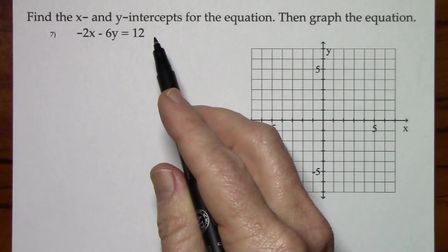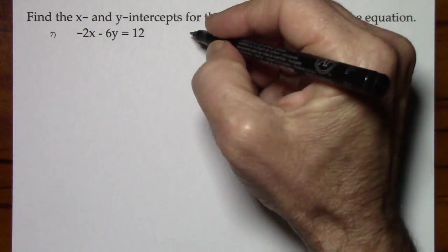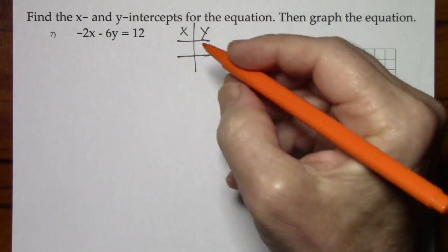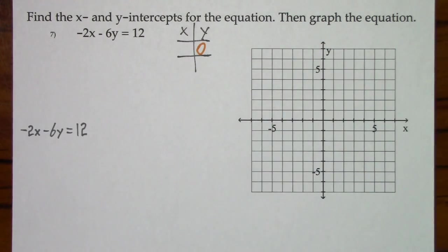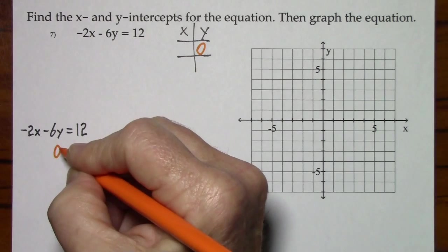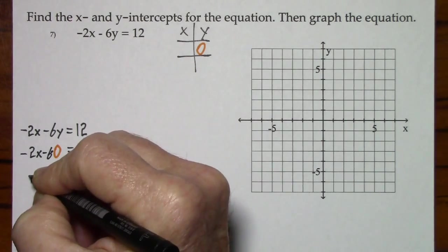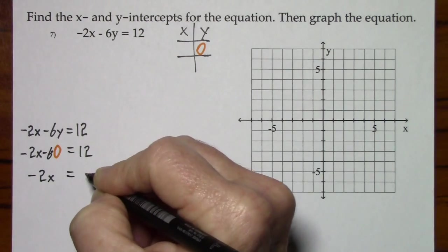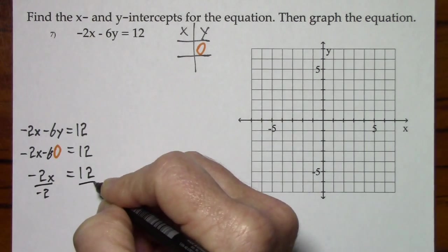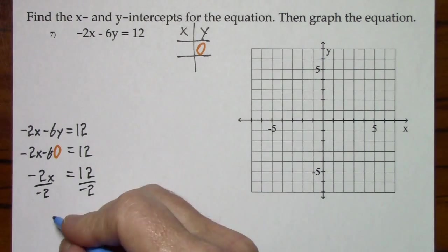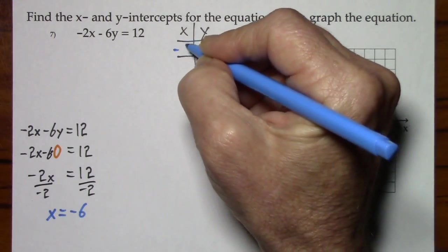With this one we're asked explicitly for the x and y-intercepts. Then we're to graph it. So I'll use an xy-chart. First for the x-intercept when y is 0. We get x is negative 6. Put that in our chart.